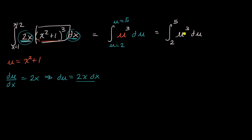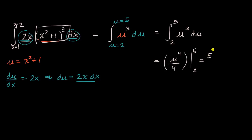So we can rewrite this as the integral from two to five of u to the third du. The antiderivative of u to the third is u to the fourth over four, and evaluating at five and two gives us five to the fourth over four minus two to the fourth over four. And we've evaluated this definite integral.